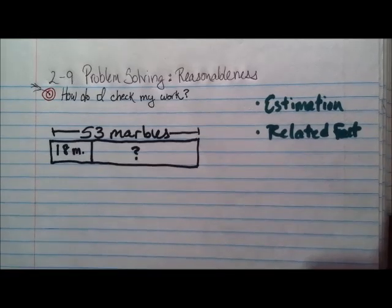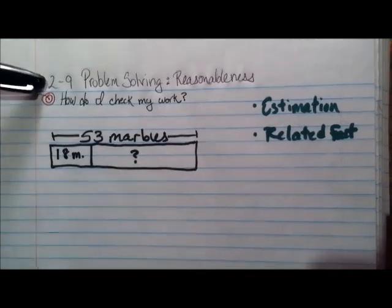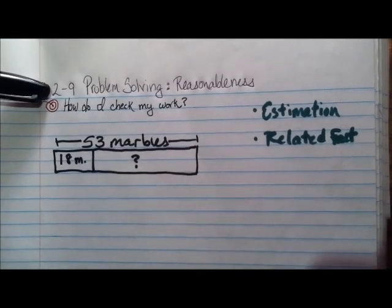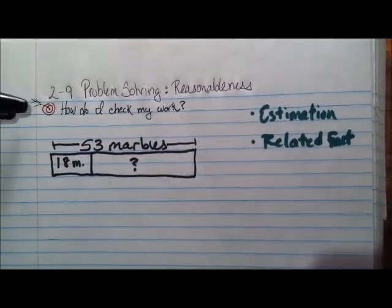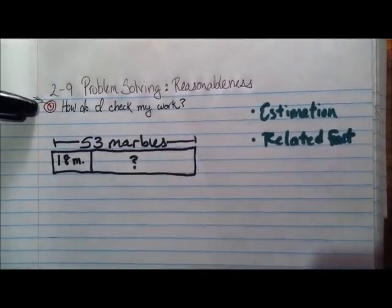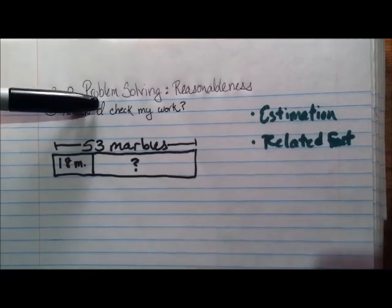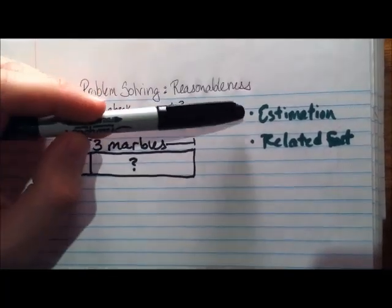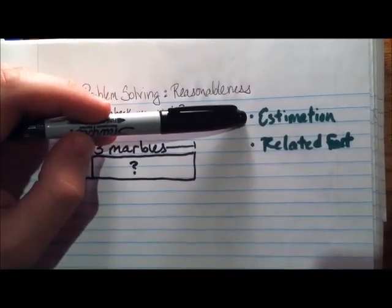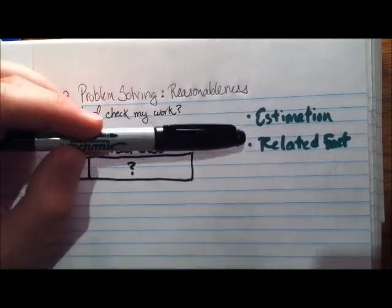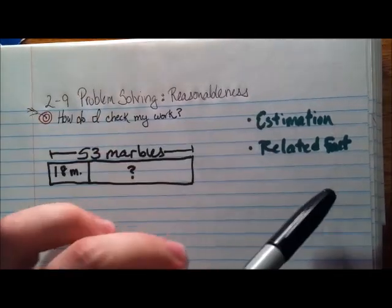Let's go to the paper. Here's our lesson today: Lesson 2-9, Problem Solving for Reasonableness. Our learning target is a question — how do I check my work? We're going to check our work using two different methods. One method is estimation, and the other one is related fact.